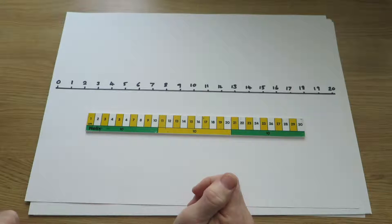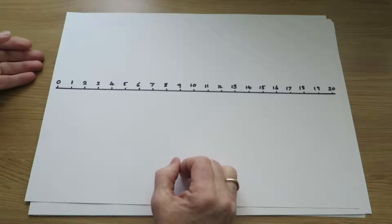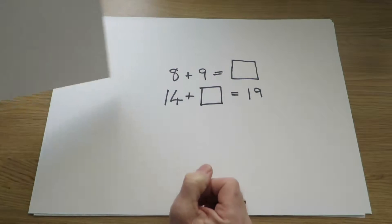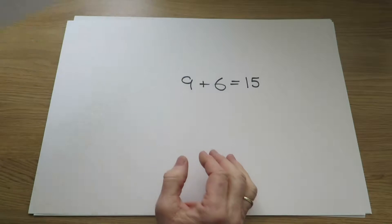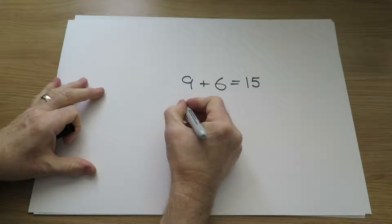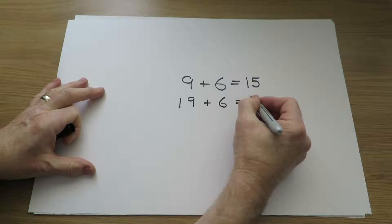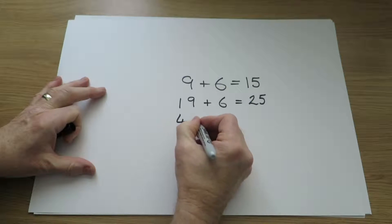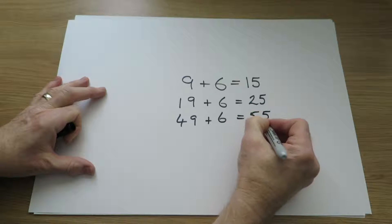Or they might use a number track, such as a clearly marked ruler, but hopefully they are beginning to simply know the answers as they have practiced so much. They can use their knowledge of number facts such as 9 add 6 equals 15 to find related facts such as 19 add 6 equals 25, 49 add 6 equals 55, and so on.